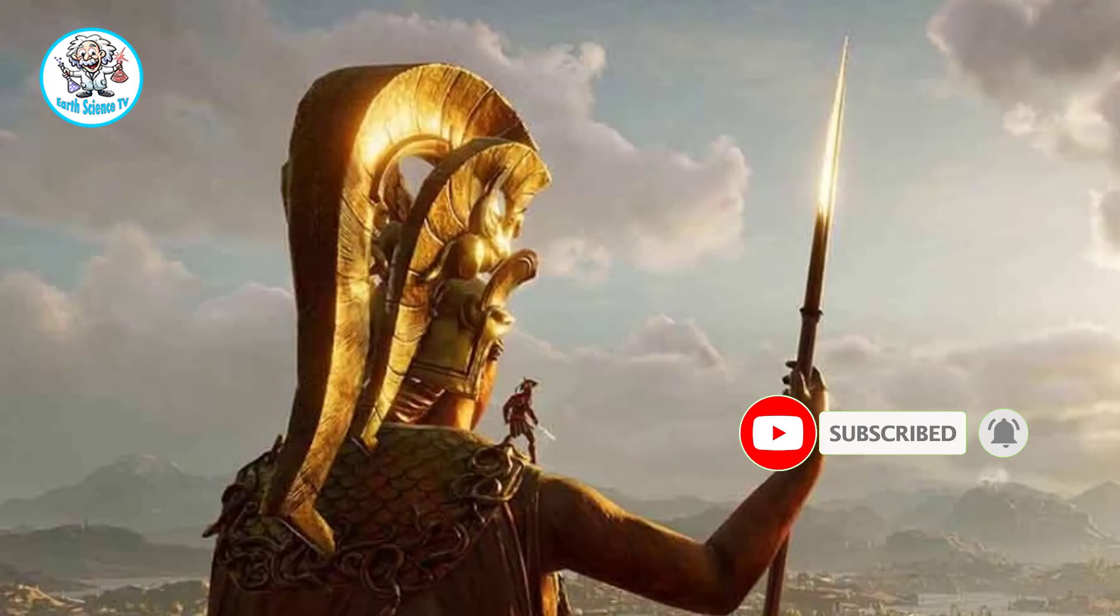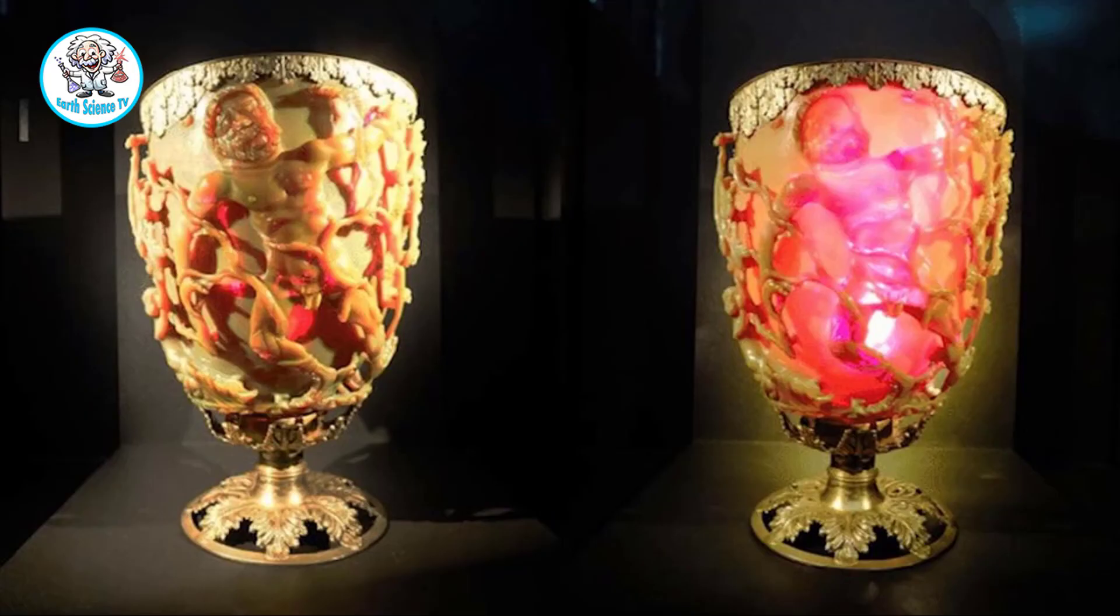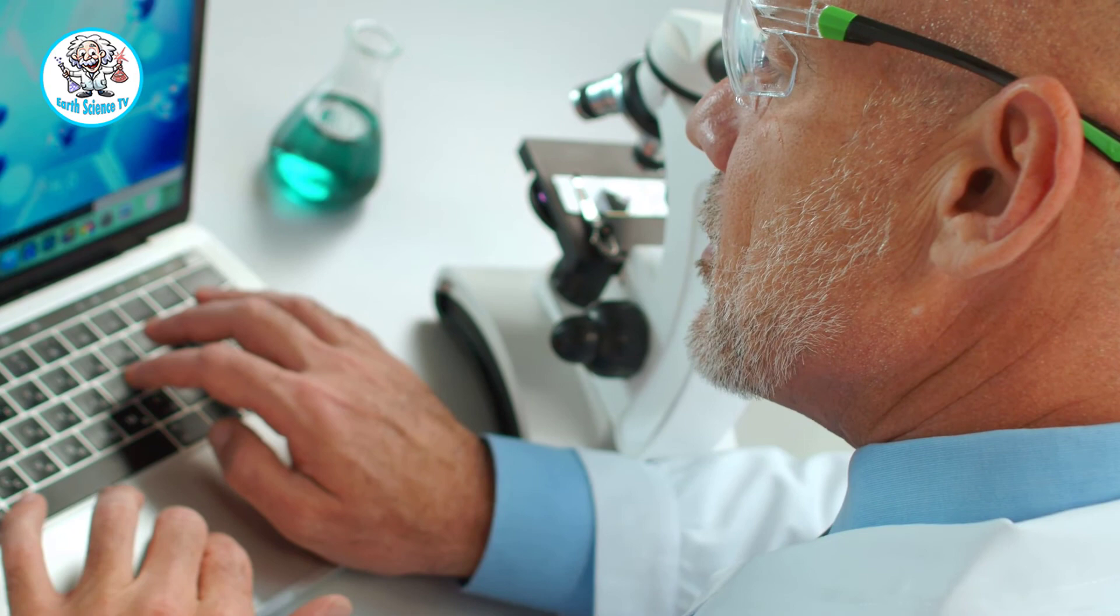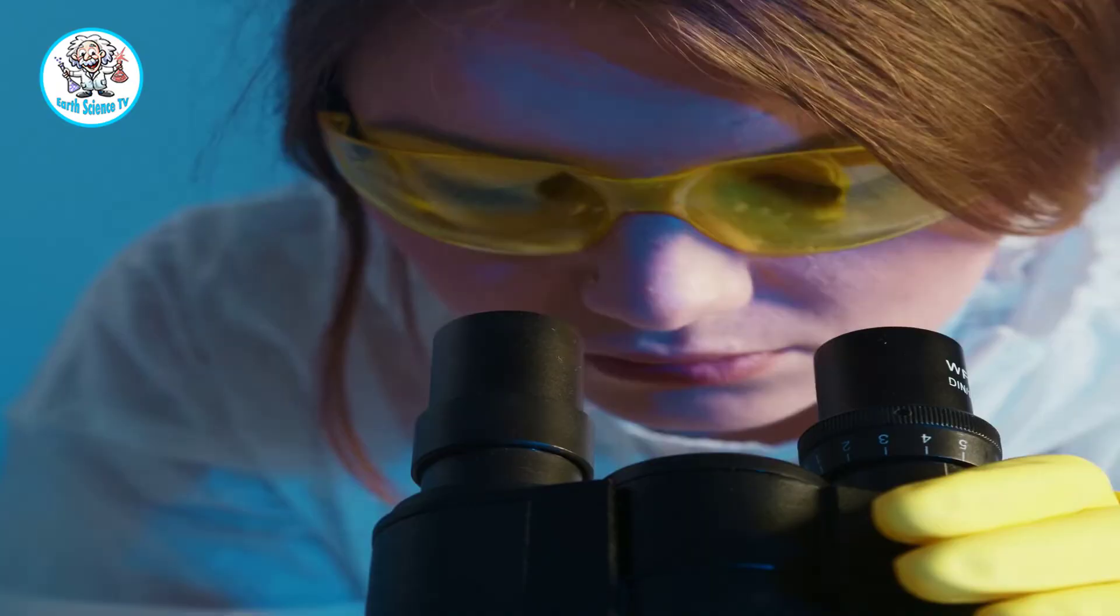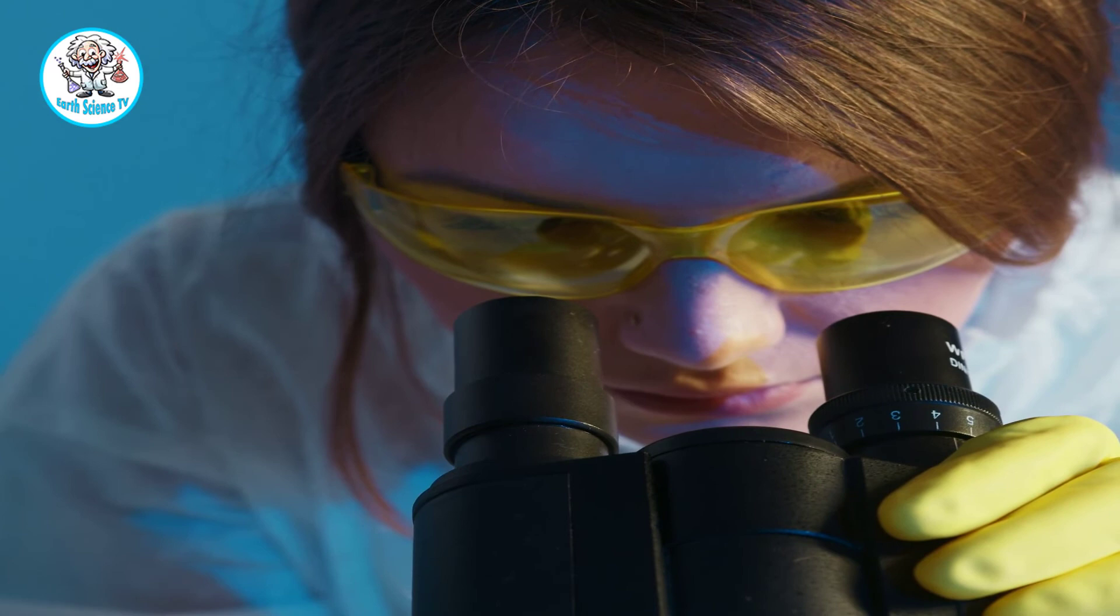The glass chalice, known as the Lycurgus Cup because it bears a scene involving King Lycurgus of Thrace, appears jade green when lit from the front but blood red when lit from behind, a property that puzzled scientists for decades after the museum acquired the cup in the 1950s.